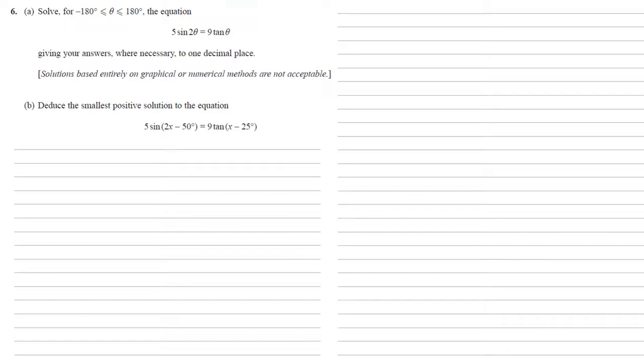So the first thing to note is that we've got sine 2 theta, that will be easier to solve if we use our identity sine 2 theta equals 2 sine theta cos theta. As we're now dealing with sine and cos, if we can also change our tan theta into sine theta over cos theta, this will make it simpler.